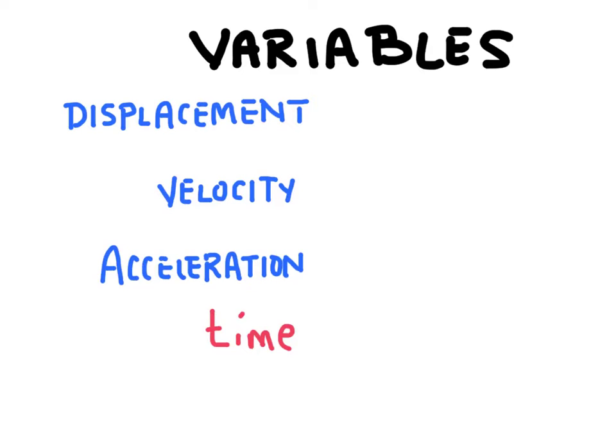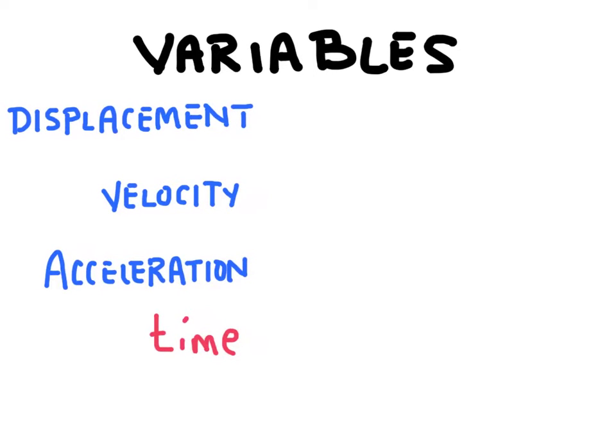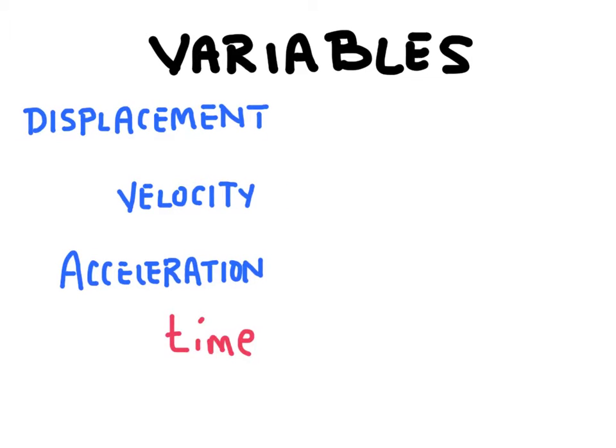Just to revisit the equations that go along with these different variables here, displacement is going to be equal to the change in position, or in other words, a final position. I'm using the letter x to represent just a position in an x-axis or along a straight line, minus a position initial.